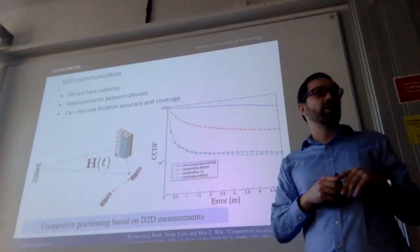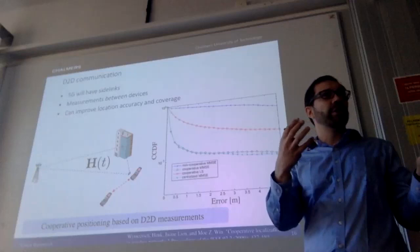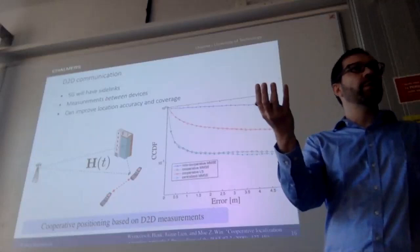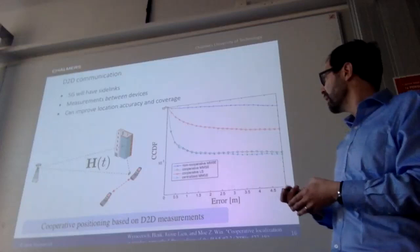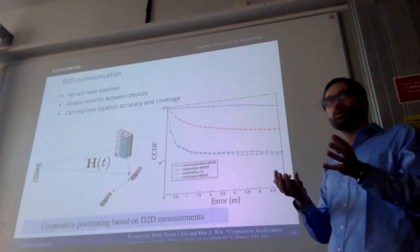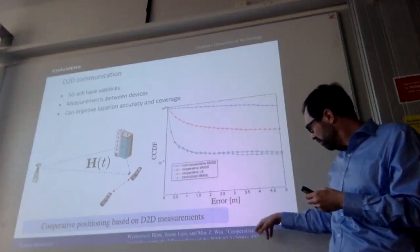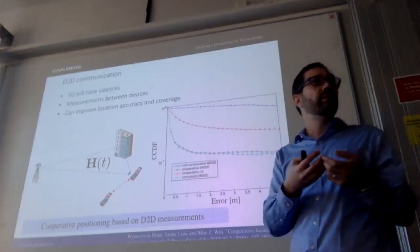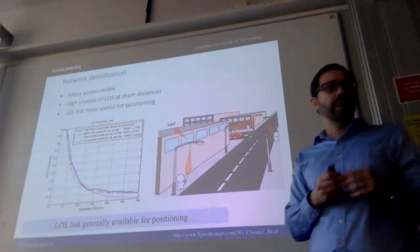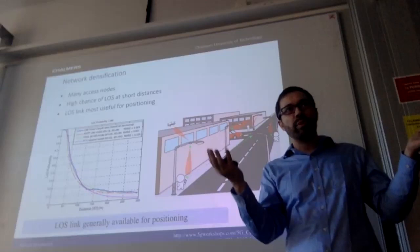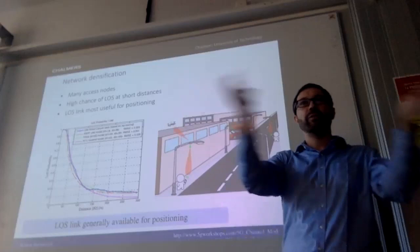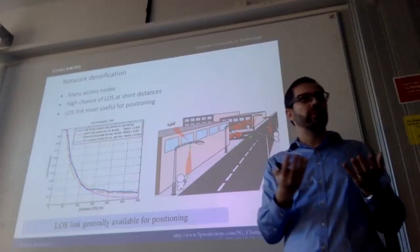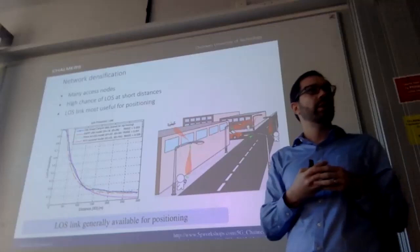Device-to-device communication in 5G also helps: two cars can measure distances and angles with respect to each other for relative positioning, enabling cooperative positioning. When I first interviewed at Chalmers I gave a talk on cooperative positioning — by sharing information in the network, you can position users better even when they're out of coverage with respect to the base station. Finally, network densification means more base stations, increasing the likelihood of line-of-sight paths, which are most useful for positioning. Each of these 5G properties is beneficial for positioning.